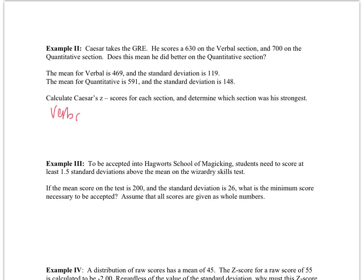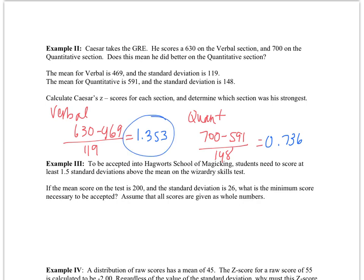For his verbal section, he had 630 minus 469 divided by 119, and for his quantitative, he has 700 minus 591 divided by 148. When we figure out these calculations, we get 1.353 for verbal and 0.736 for quantitative.